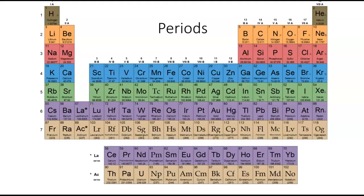First up, we see that the table is divided into rows. Each row is called a period and is numbered from one to seven. The periods are arranged so that many properties of the elements increase or decrease fairly smoothly as you read from left to right.